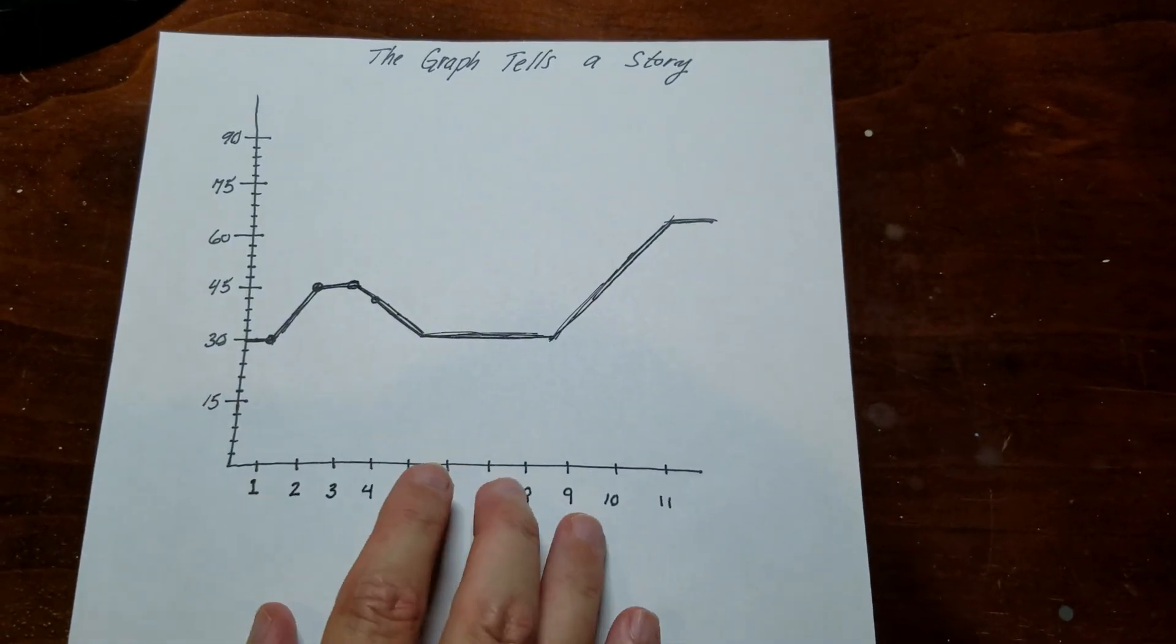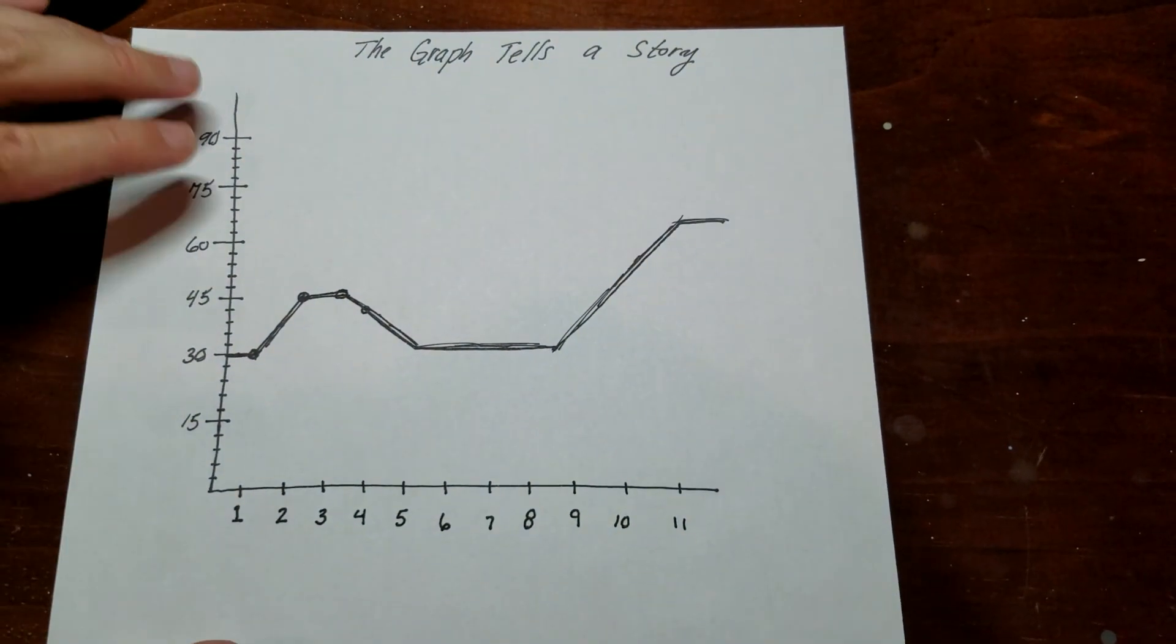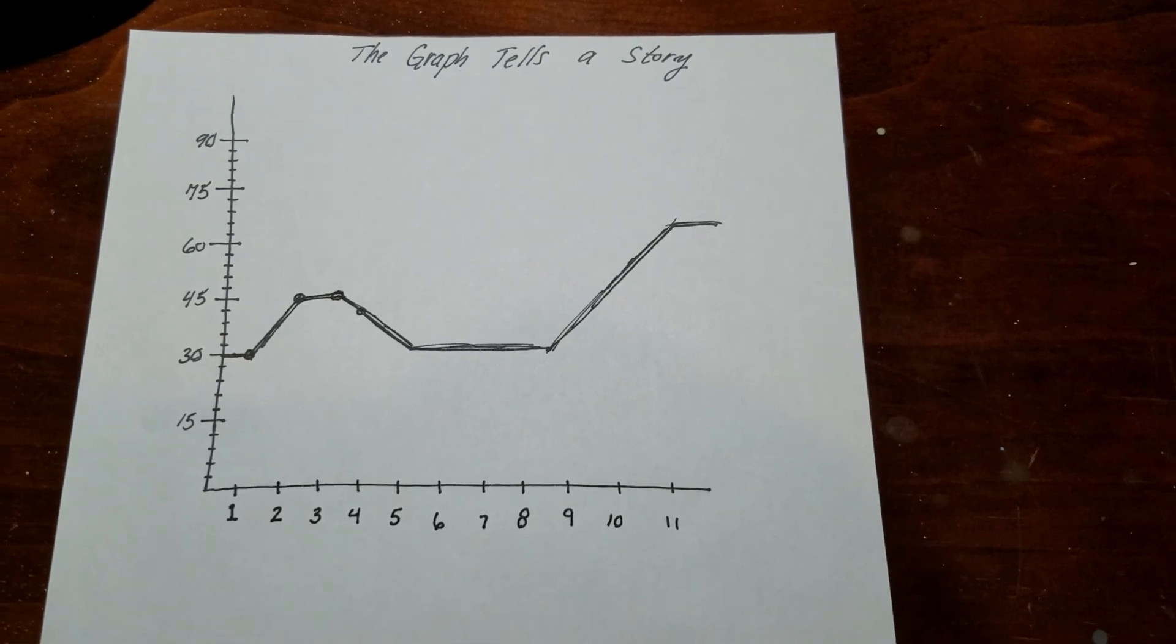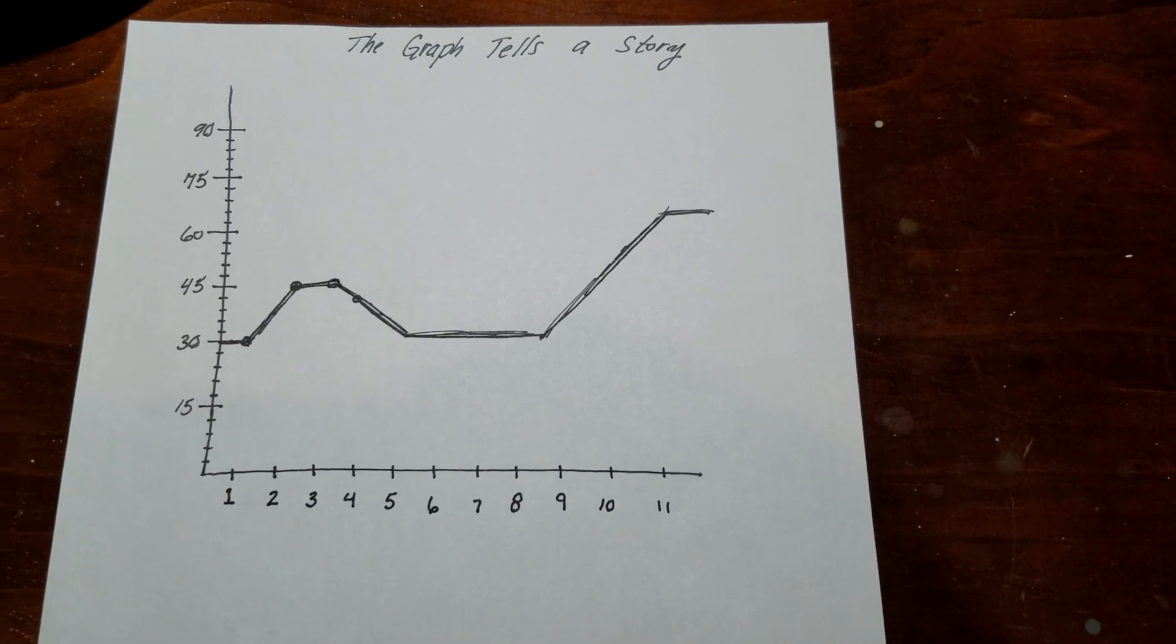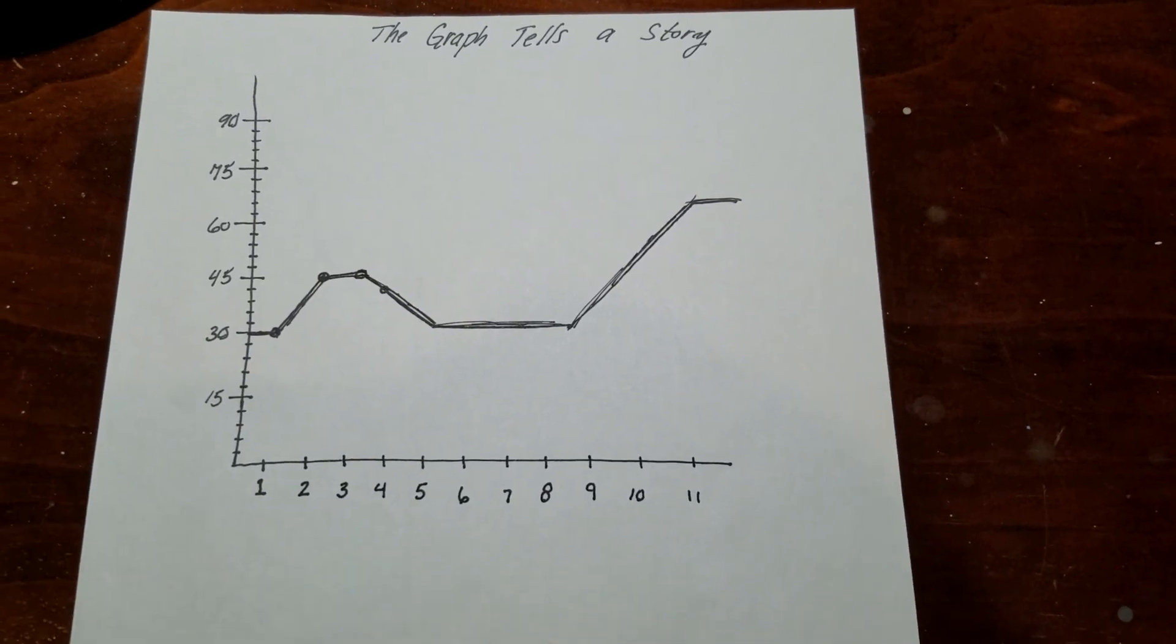So that'd be an example of a changing total. It's the total amount of water in the fish pond is changing over the course of the day. So that's an example of how you can make up a story for a line graph.